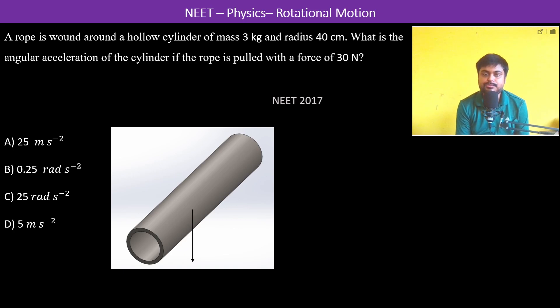A rope is wound around a hollow cylinder of mass 3 kg and radius 40 centimeters. What is the angular acceleration of the cylinder if the rope is pulled with a force of 30 newtons?